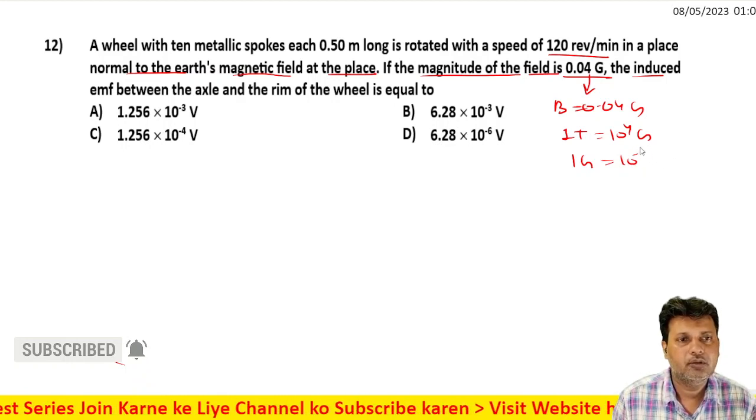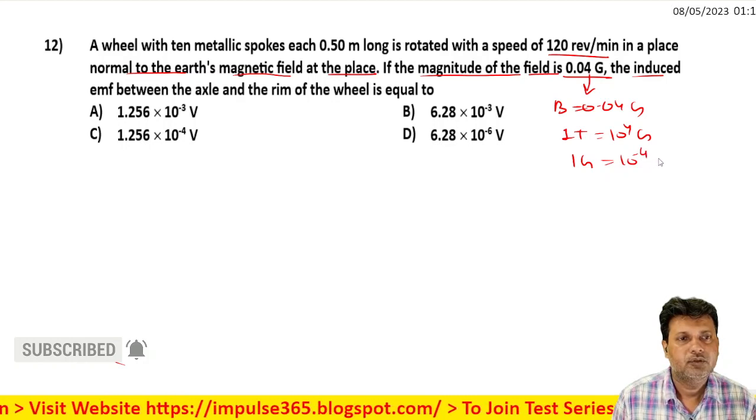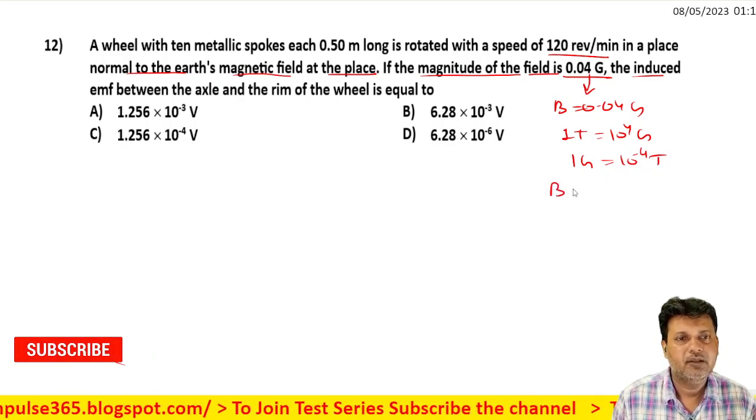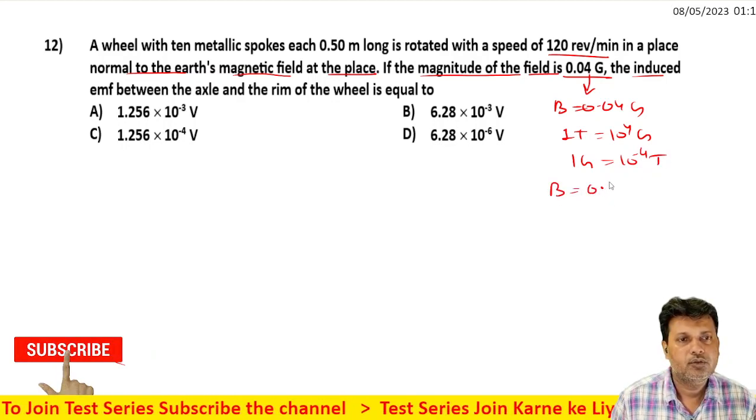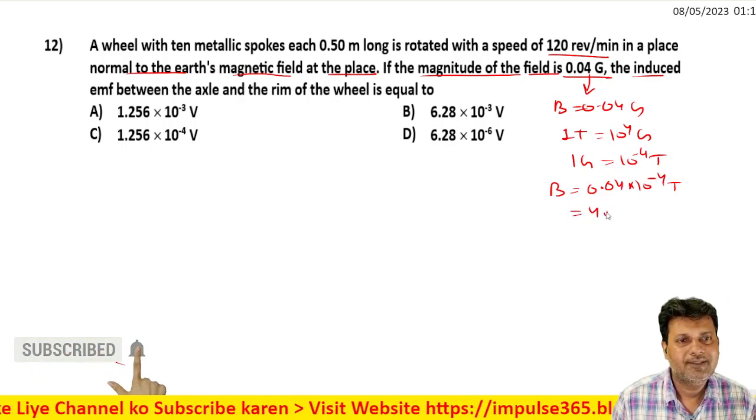Therefore, 10 to the power minus 4 tesla. So the magnetic field value is 0.04 into 10 to the power minus 4 tesla.